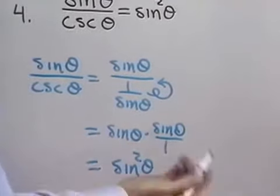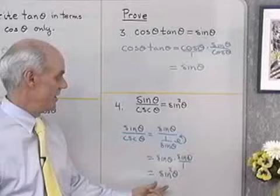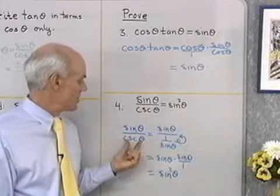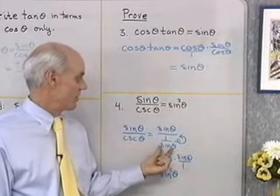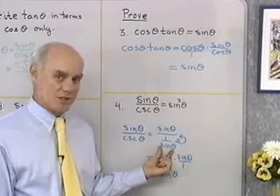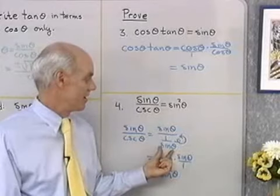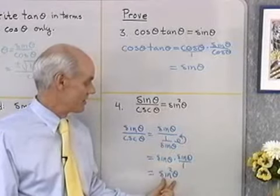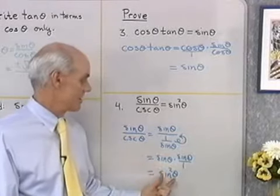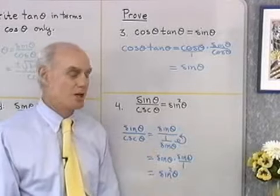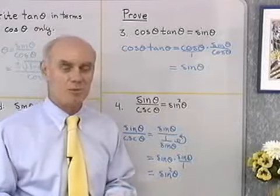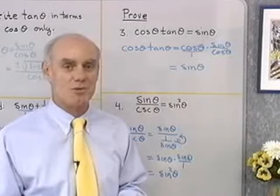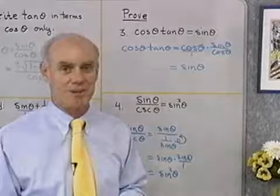Sine theta times sine theta is sine squared theta, divided by 1 is the same as sine squared theta. I've started with the left side, replaced cosecant theta with the equivalent expression 1 over sine theta using a reciprocal identity, performed a little algebra, and shown that the two expressions are equivalent — just more practice with the identities from the definition of the six trigonometric functions.